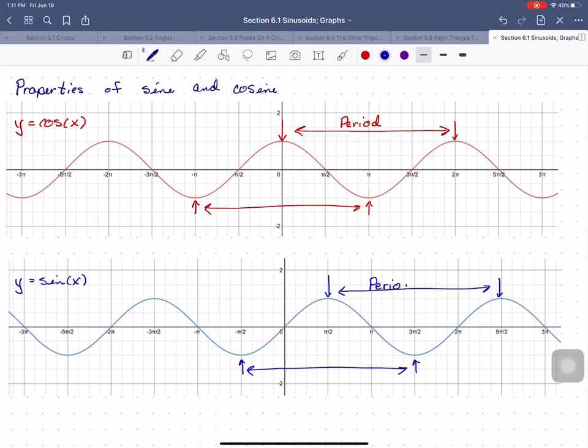But for both sine and cosine in their natural forms, the period is 2π.